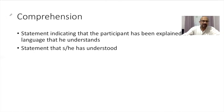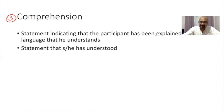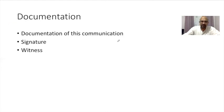The third important component is comprehension — determining whether the individual participant has understood what was explained. There should be a statement in the informed consent document indicating that the participant was given information in a language they understand, and a statement that they confirm they have clearly understood what was told to them. This entire process then needs to be documented with a signature and two unbiased witnesses.